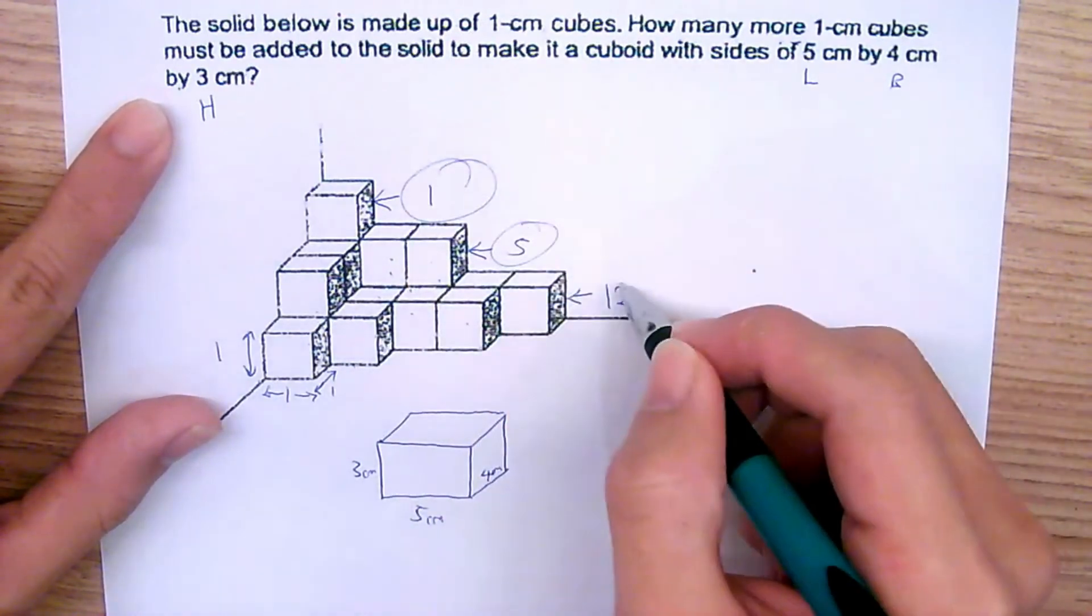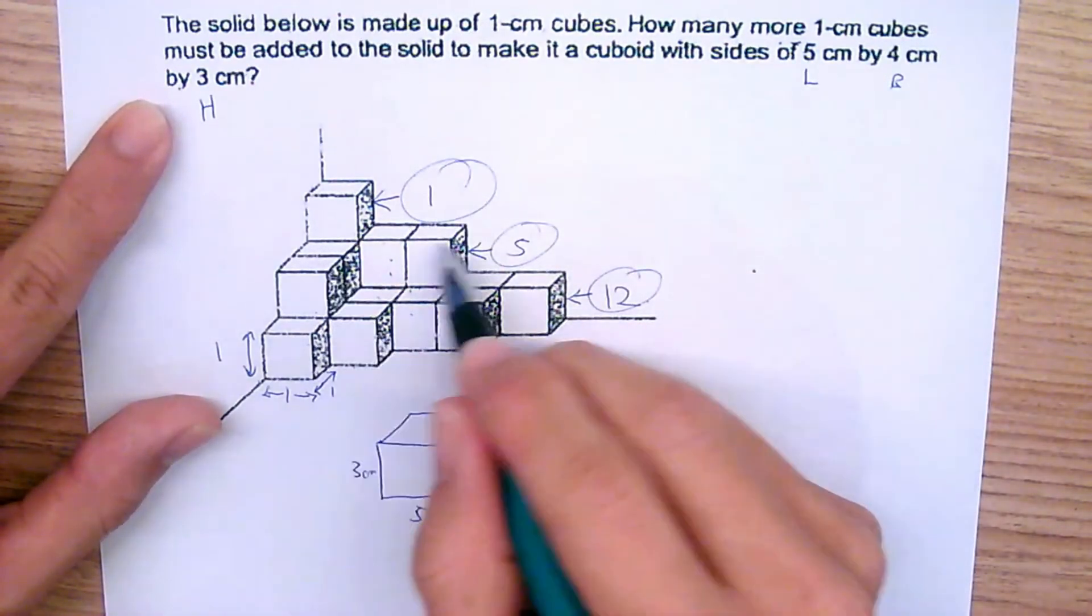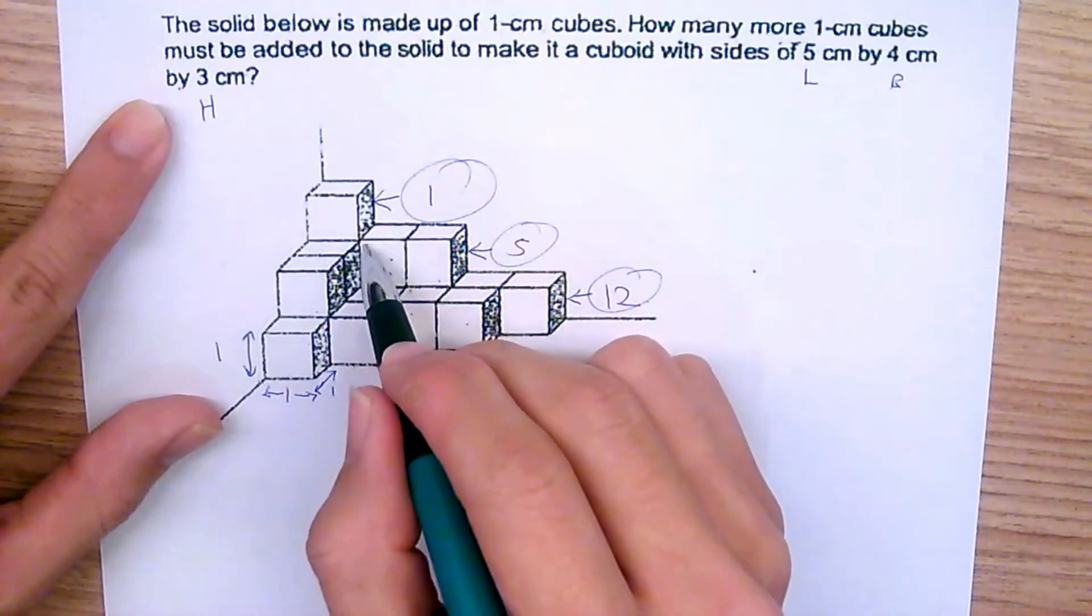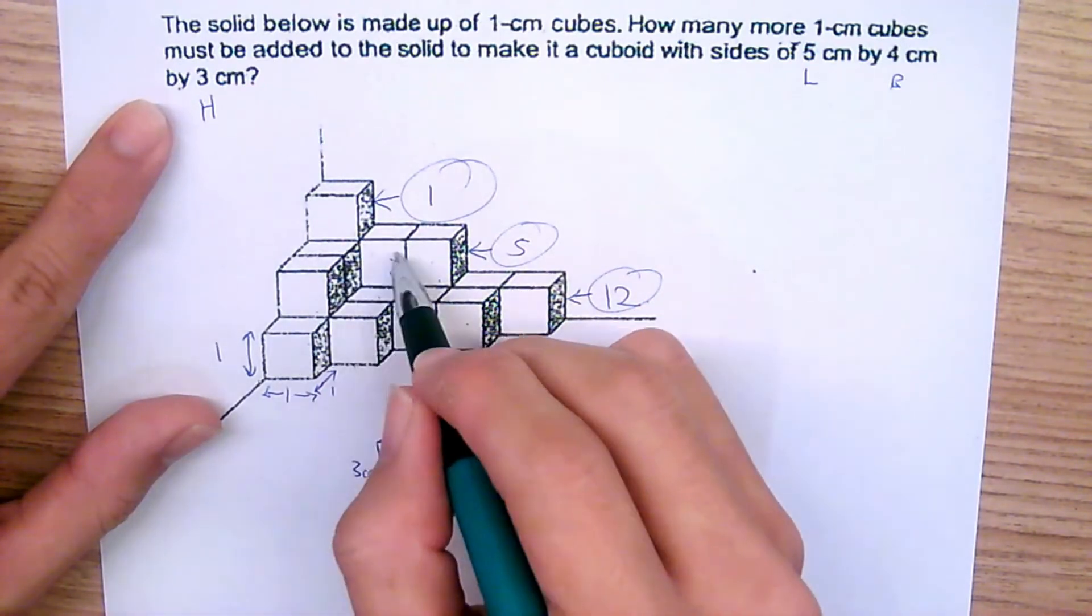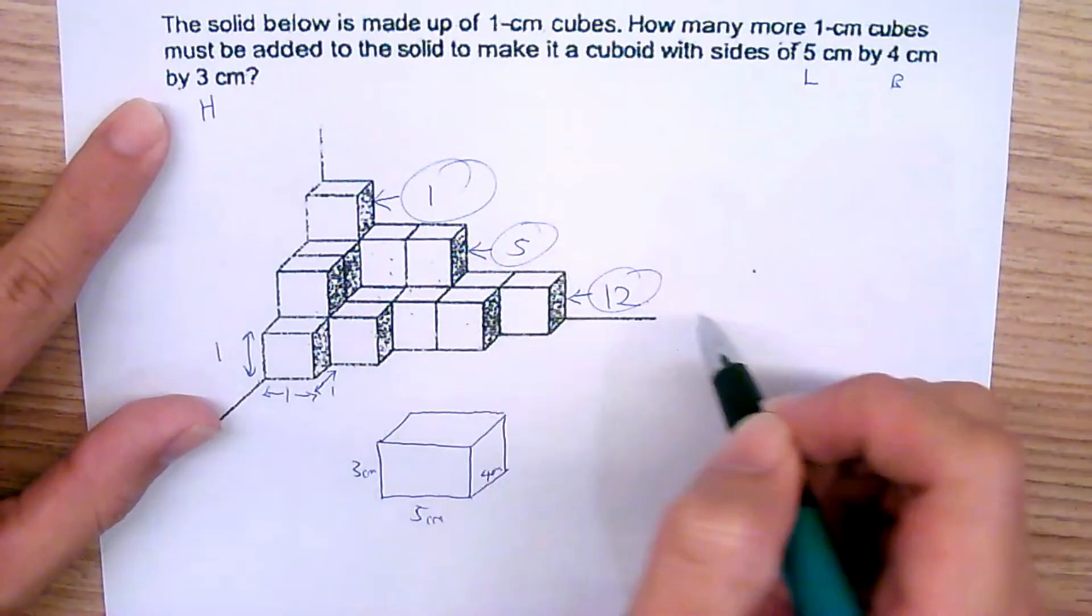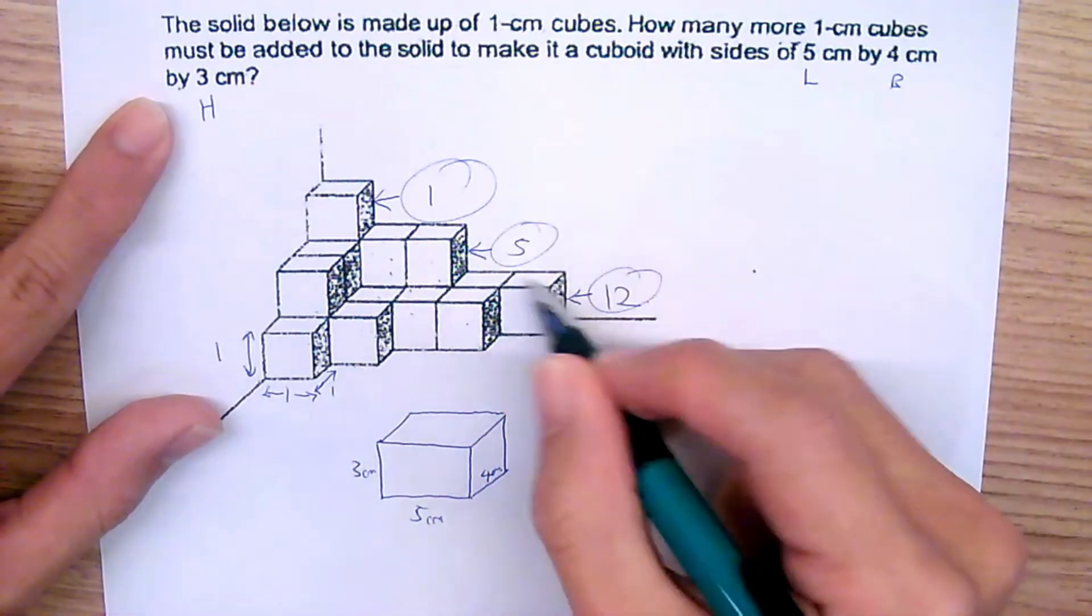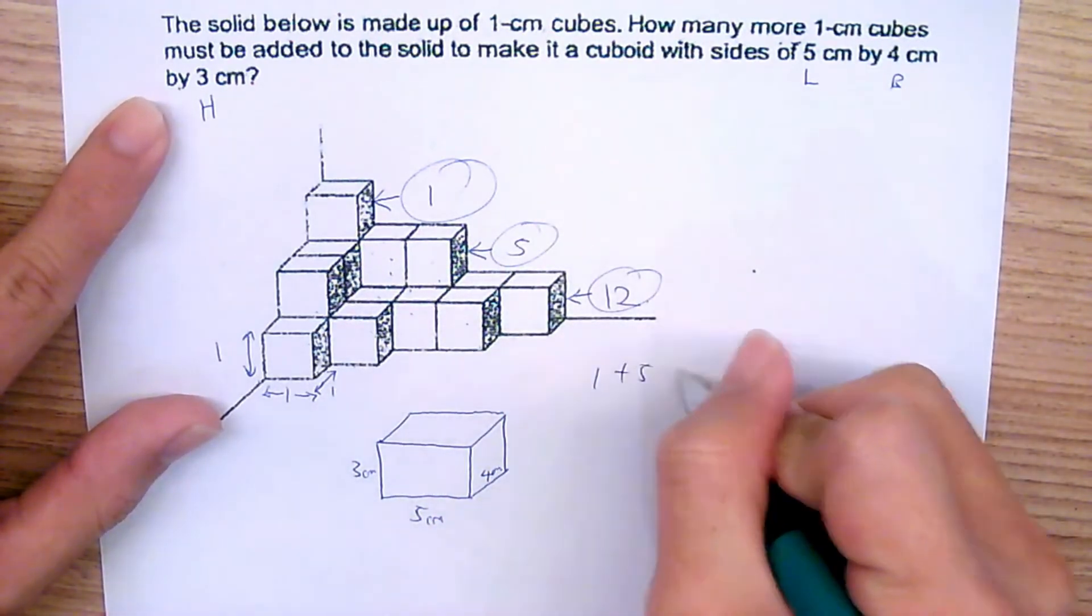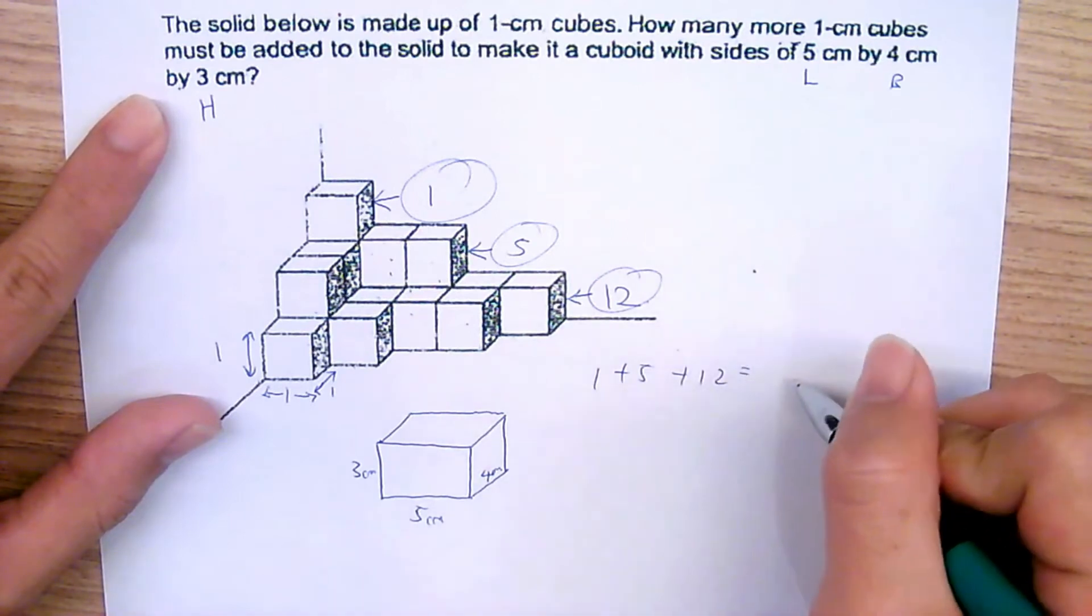So total is 1 plus 5 plus 12. Remember, always cut up different levels. Do not just go and count inside, then left, then right, then center. You will definitely be very confused. Cut them out in different chunks. We have 1 plus 5 plus 12 cubes altogether, giving us 18 cubes.